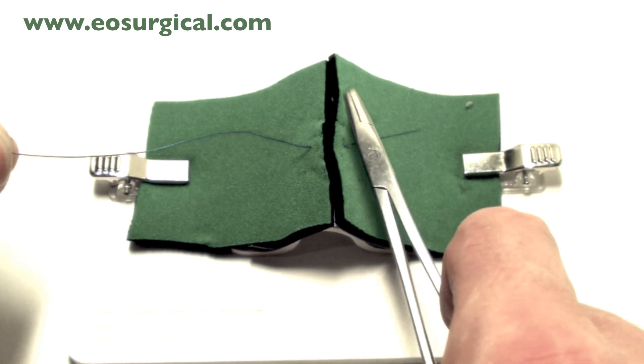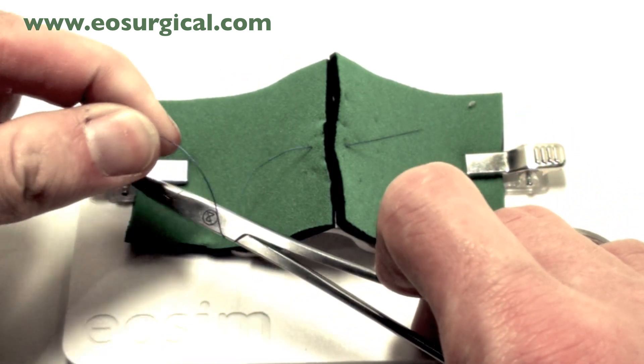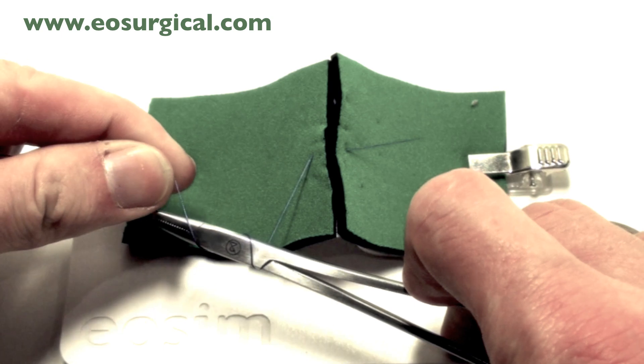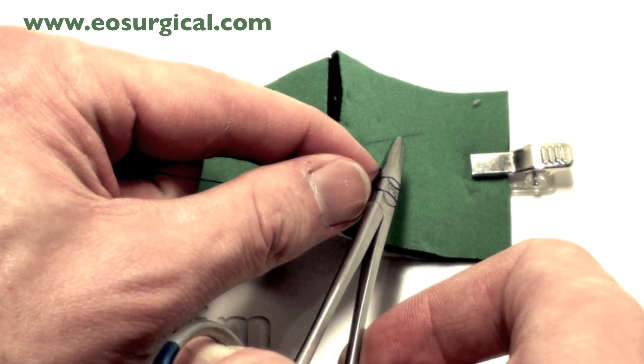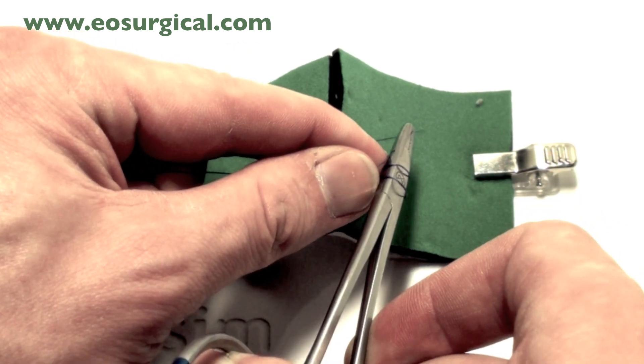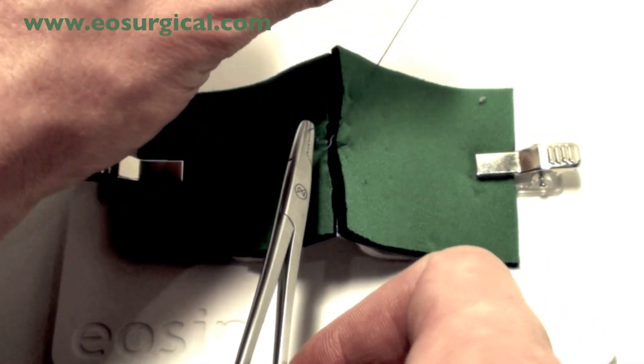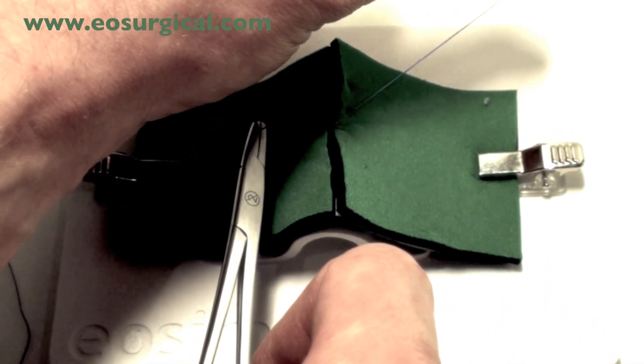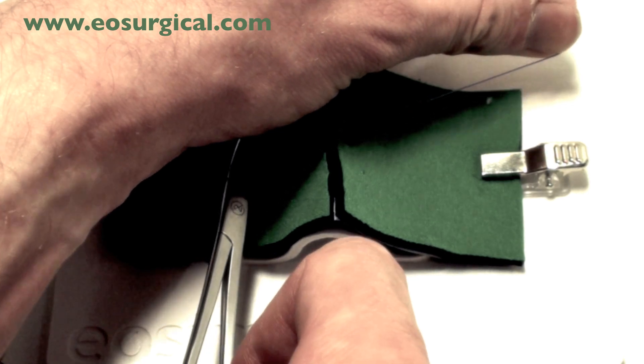Now start at the short end and bring the needle holder up and wrap the longer end of the suture around it twice. This will be your first throw. It's important that your arms cross at this point to ensure that you've got a flat knot.